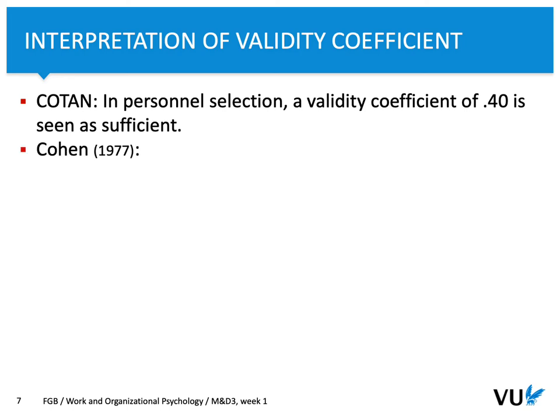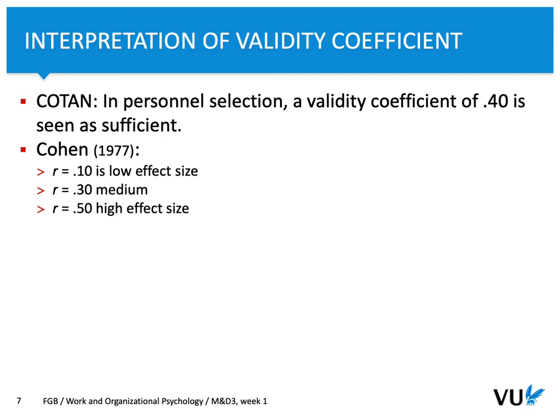The situation is slightly different for research purposes. According to Cohen, we differentiate between three levels of correlation or effect sizes: 0.10 is low, 0.30 is medium, and 0.50 is high. So if the average relationship between personality traits and work-related behavior is 0.30, that is a medium value. If it is 0.60, that is a high effect size — a really strong relationship.